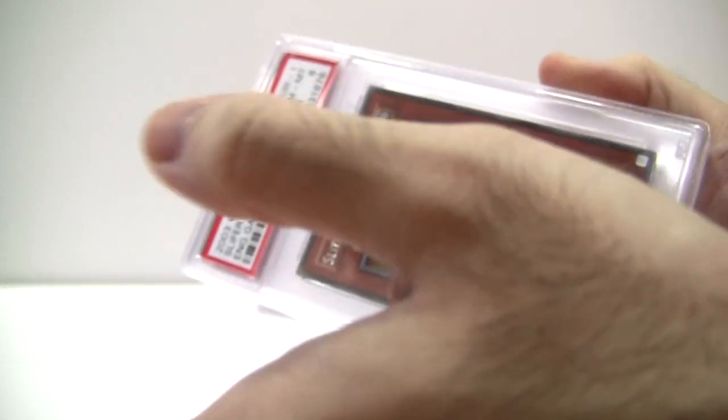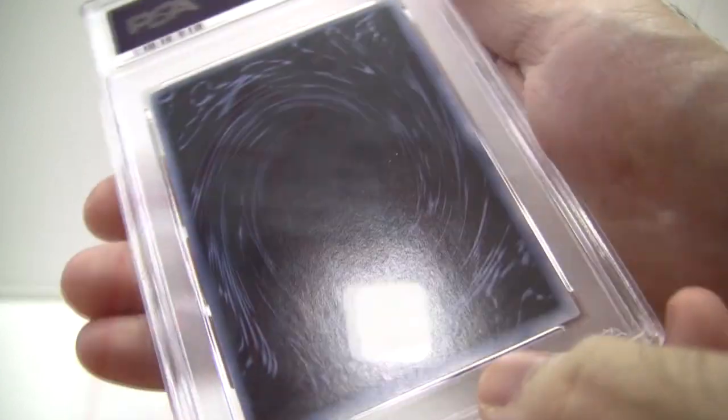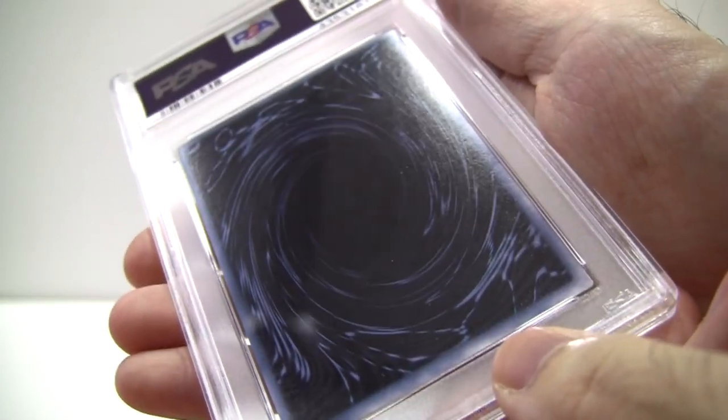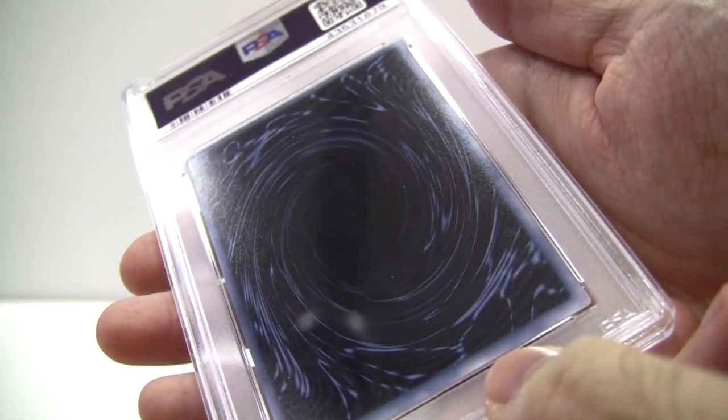Annoyingly enough, just like with my DDS set, they gave Obelisk, my favorite Egyptian god, a much, much lower grade than Slifer and Ra, breaking up the set once again. And I can only assume it's due to poor centering on the card back once again.